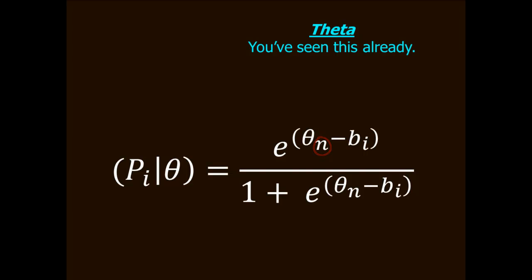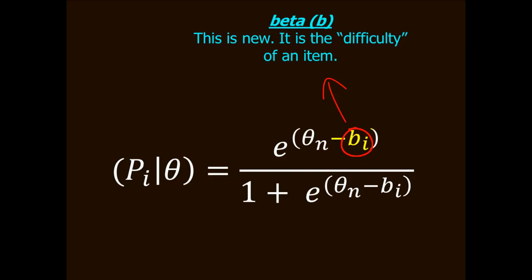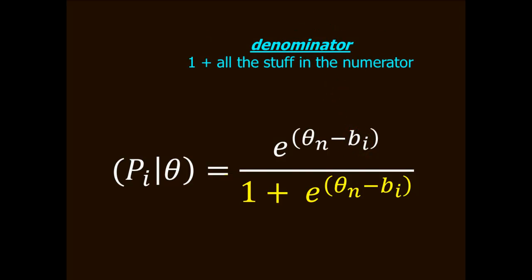Theta is followed by minus b subscript i. The b is beta, and it stands for the difficulty of the item. Now look at the denominator, and you'll see that it's just one plus everything that's already in the numerator, so nothing new here.